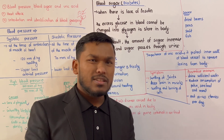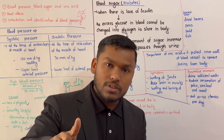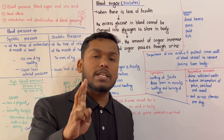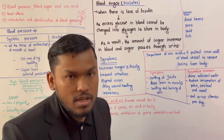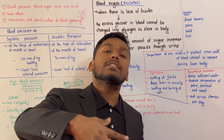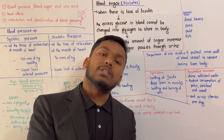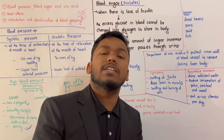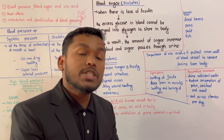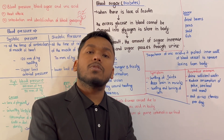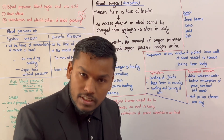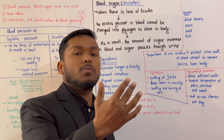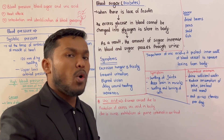A doctor first looks at how diabetes affects the brain and other organs. Blood vision changes can occur. Frequent urination is a key symptom. Diabetic patients may not feel obviously sick, but symptoms are present.